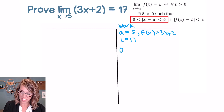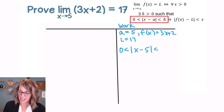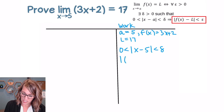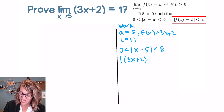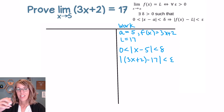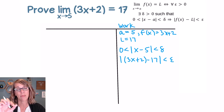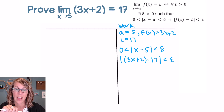I also need to define my delta statement: 0 less than |x minus A|, but A is 5, is less than delta. And my epsilon statement: |f(x) minus L|, which is |3x + 2 minus 17|, is less than epsilon. If you need to memorize these statements, think alphabetical — in the x direction we're limited by delta, and delta comes before epsilon. In the y direction, the limiting value is epsilon.